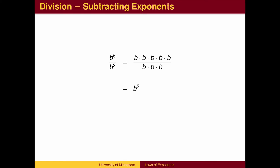When we divide powers, we cancel. In this case, b squared remains. We can achieve the same result by subtracting exponents. The b cubed in the denominator removes 3 of the 5 b's from the numerator, leaving 2.